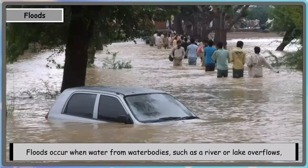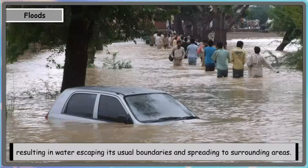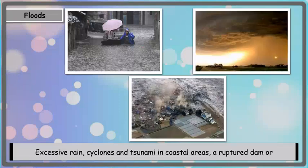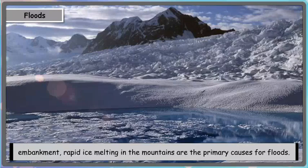Floods occur when water from water bodies such as a river or lake overflows, resulting in water escaping its usual boundaries and spreading to surrounding areas. Excessive rain, cyclones and tsunamis in coastal areas, a ruptured dam or embankment, and rapid melting of ice in the mountains are the primary causes of floods.